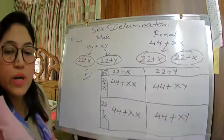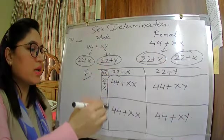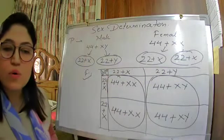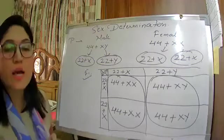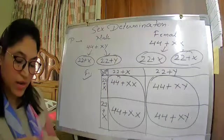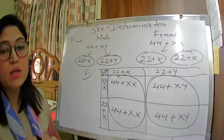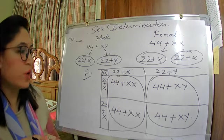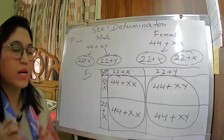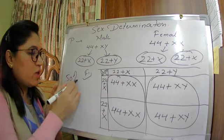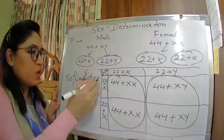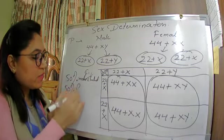So what did we find? 50% of the offspring are female (XX) and 50% are male (XY). At the time of fertilization, there are 50-50% chances that the child may be a boy or a girl. From the Punnett square method, we have found 50% chance of a male child and 50% chance of a female child.